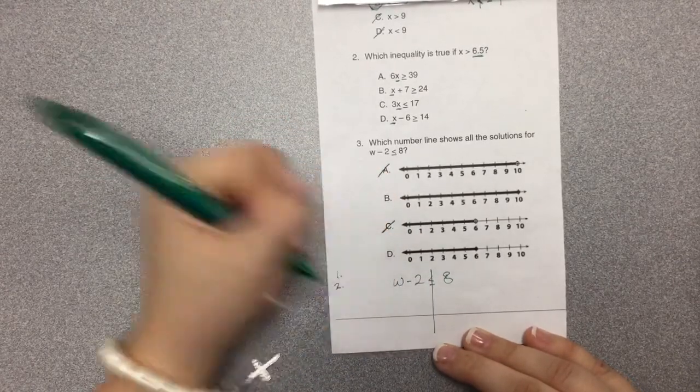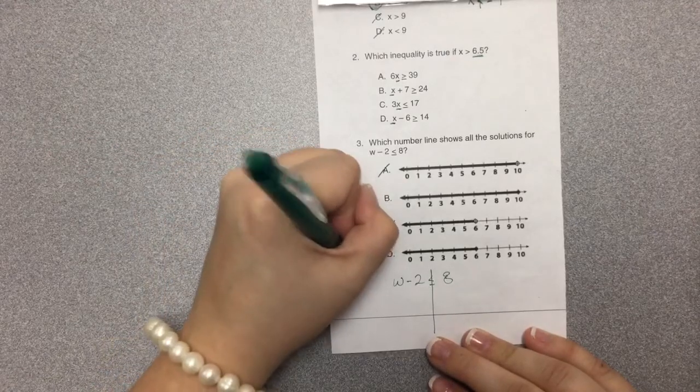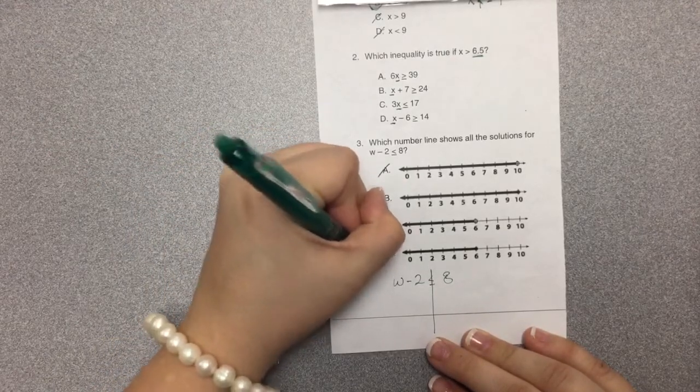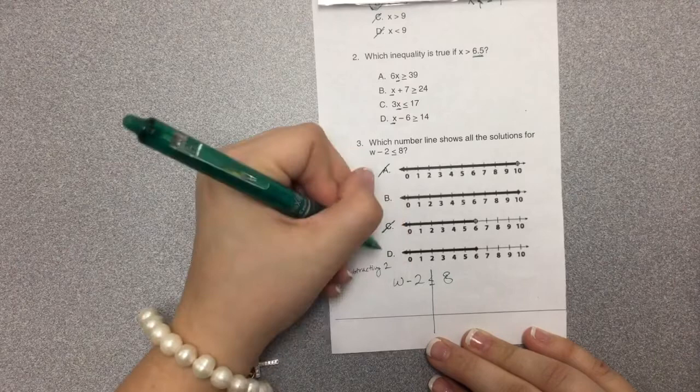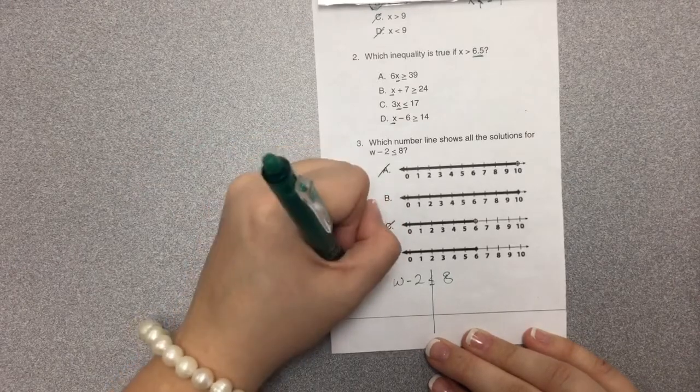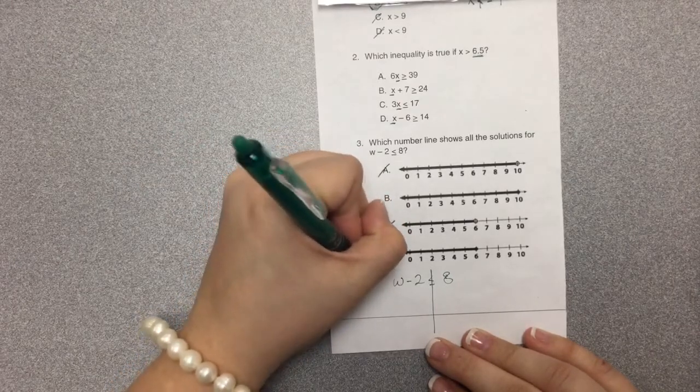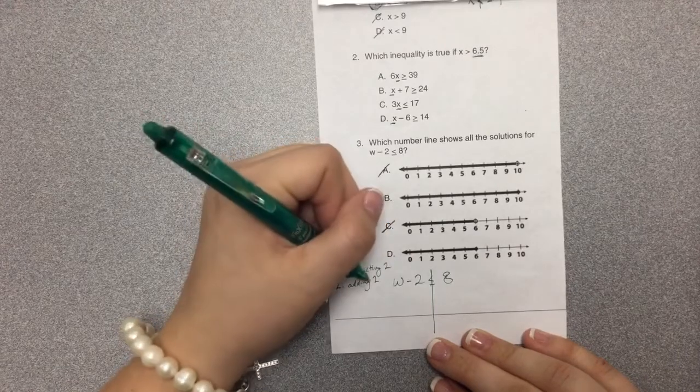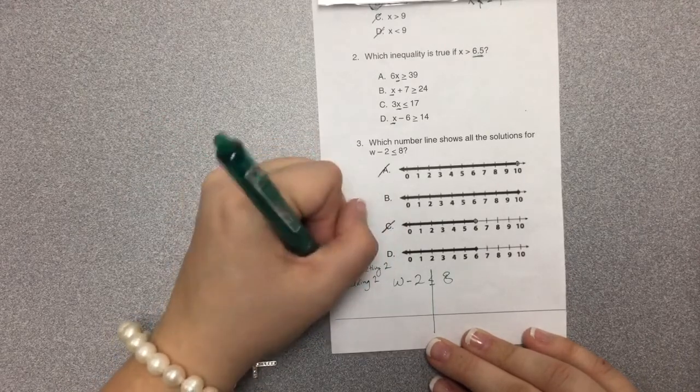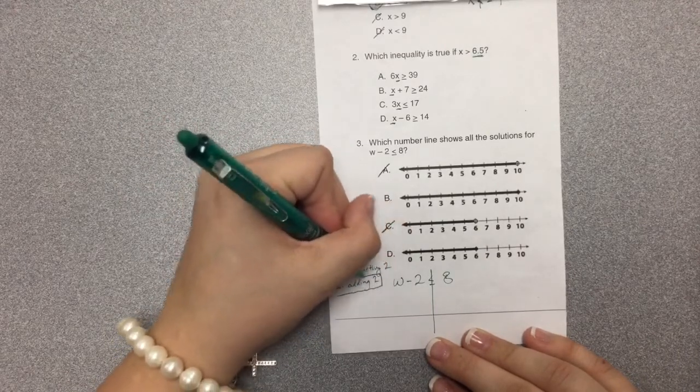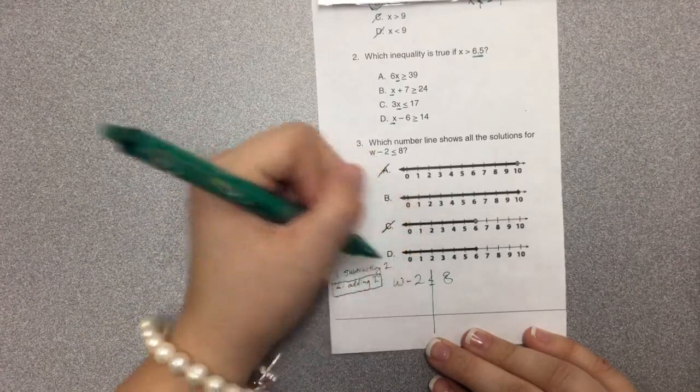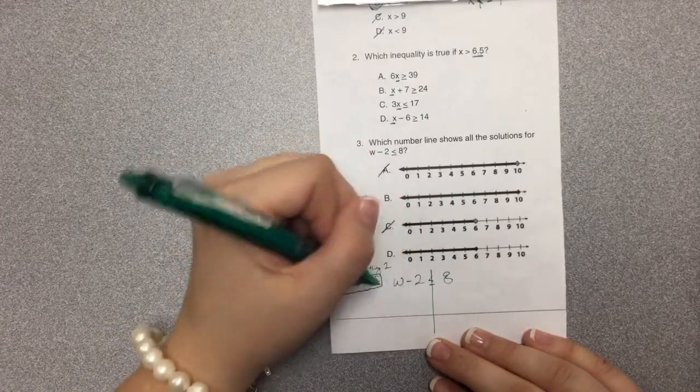So we have the operation. What's the operation? We're subtracting 2. The opposite of subtracting 2 is adding 2. The reason we do the opposite to both sides is to get our variable all by itself.